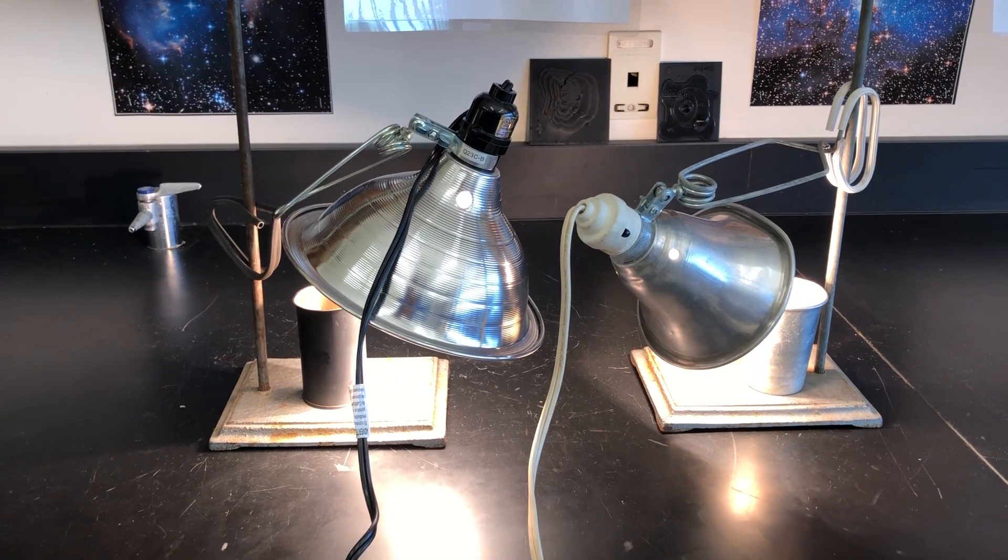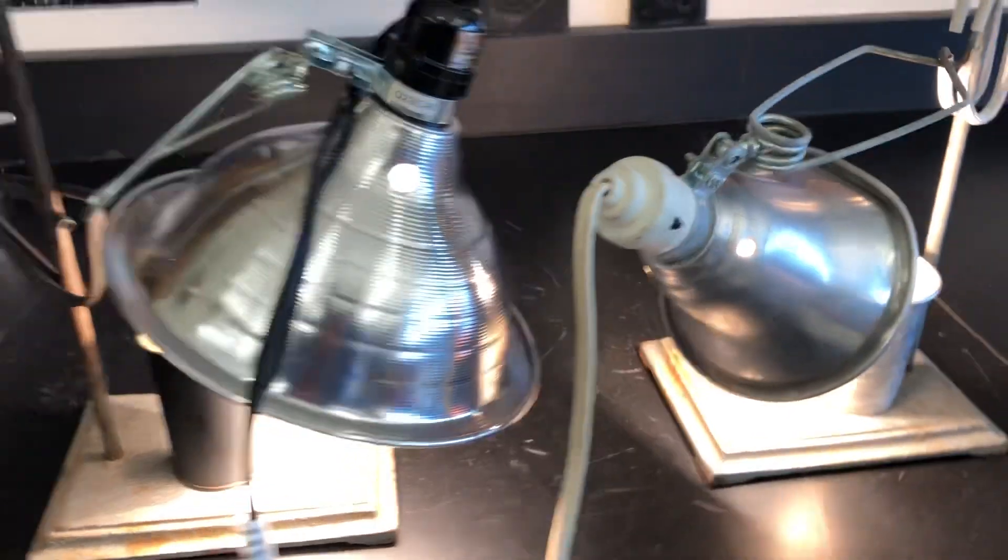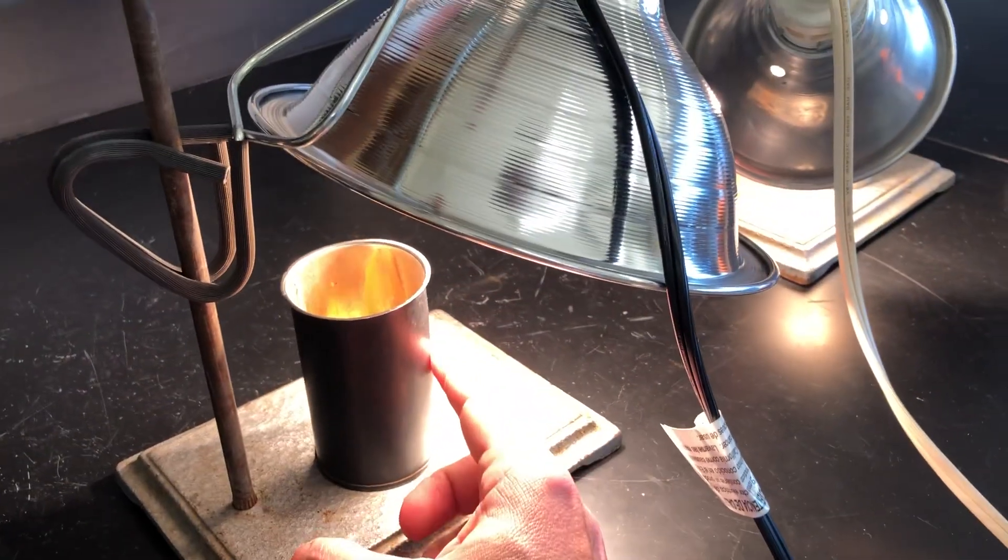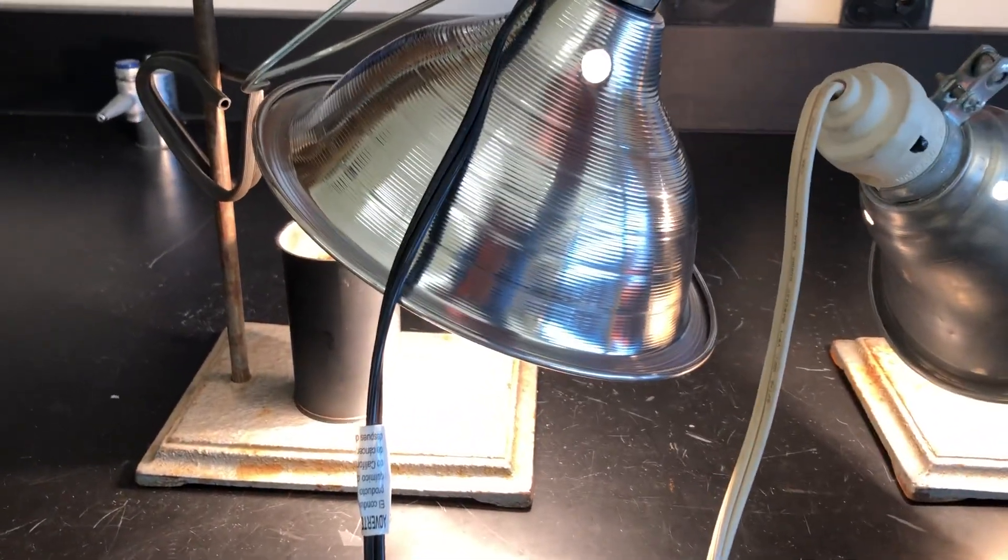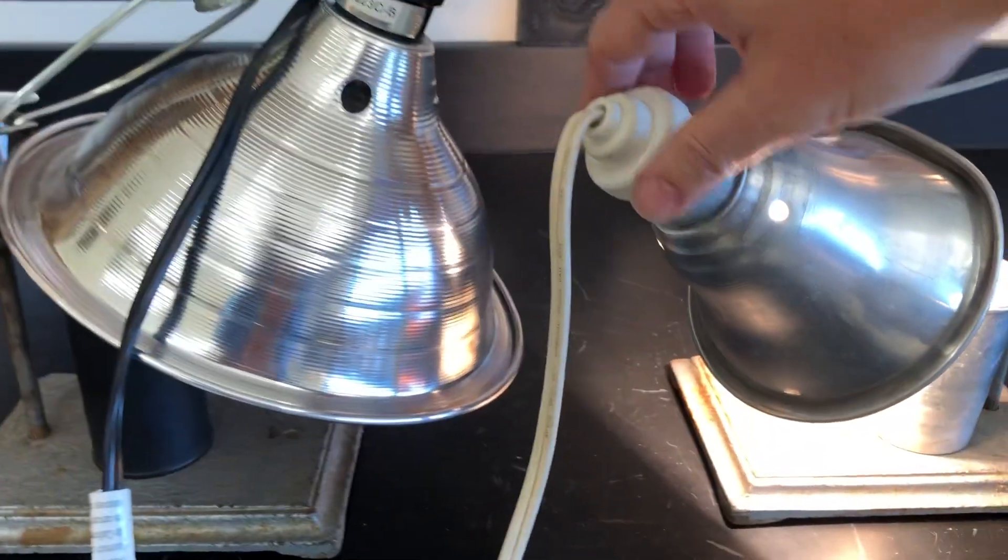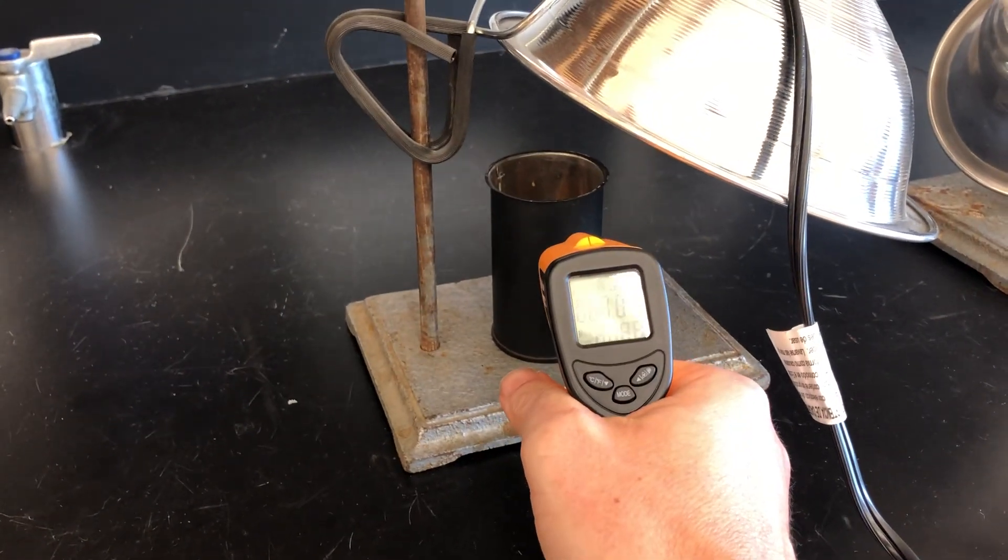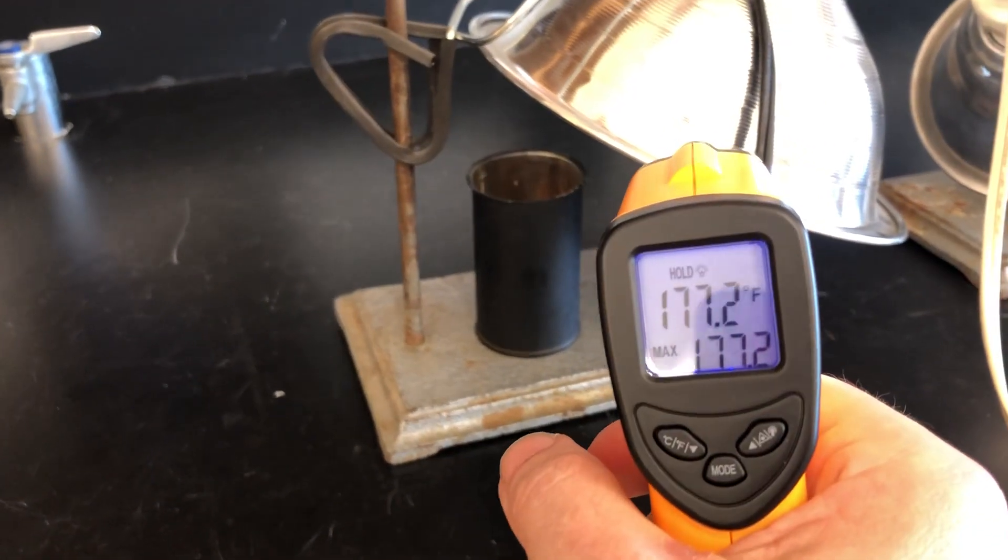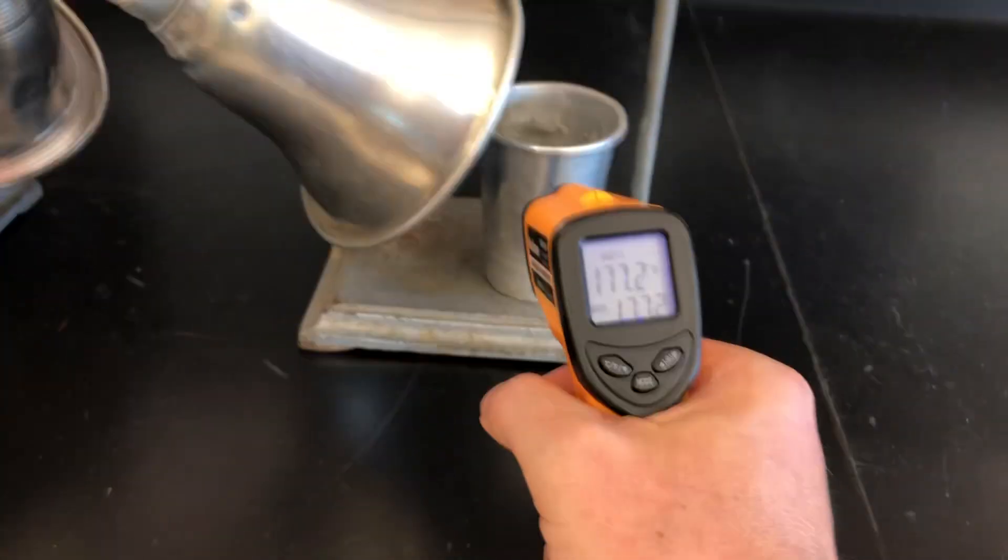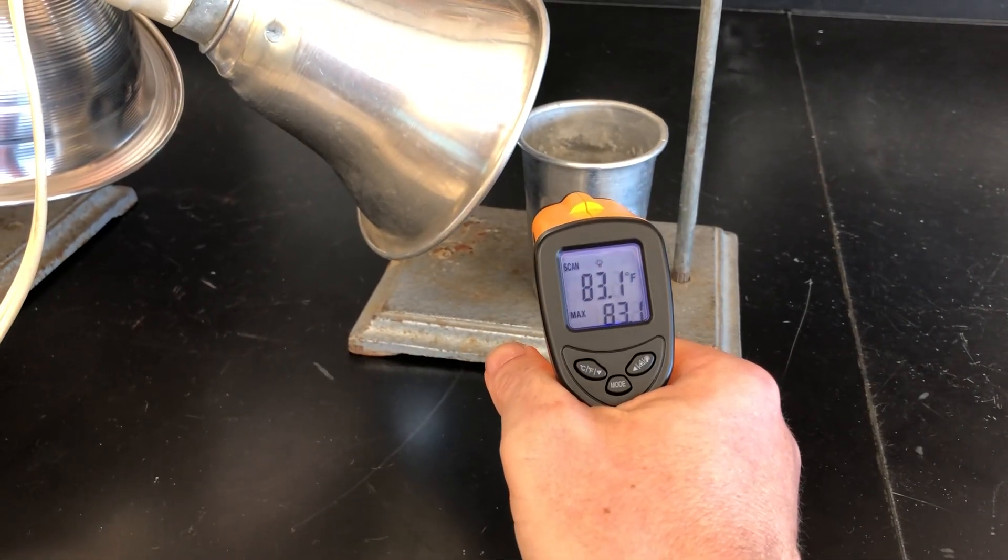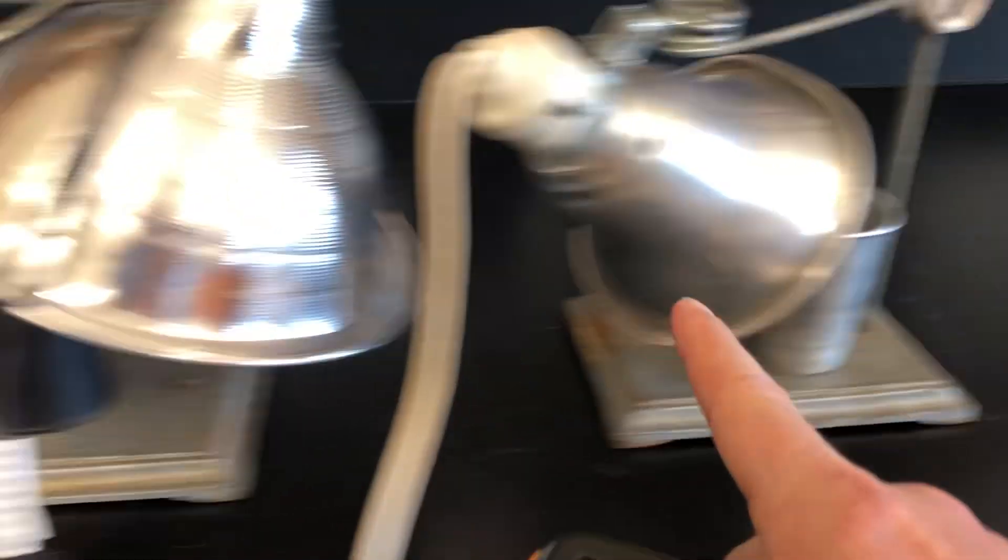So I end up only keeping the heat source on there just for a short amount of time. And what I do is I just kind of get a quick feel here. Okay, that's pretty warm. So watch this. I'm going to turn the heat source off. I'm going to turn the heat source off there. Take my infrared thermometer. Get the temperature. 177 degrees. In about 30 seconds, 177. On the silver can, 83. 177 and 83.